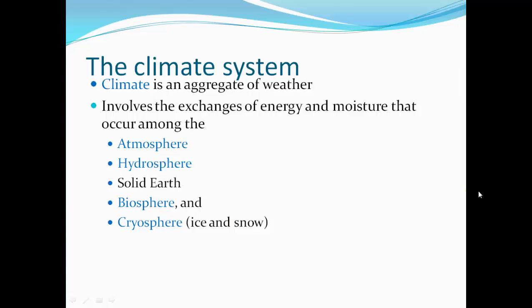Climate System. Climate is an aggregate of weather. It involves exchanges of energy and moisture that occur amongst the atmosphere, hydrosphere, solid earth, and biosphere.